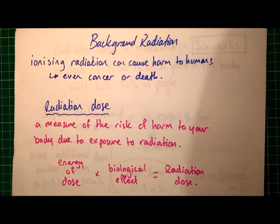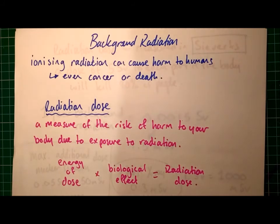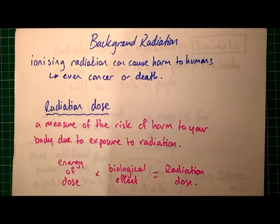Hello. Today we're going to talk about background radiation. As a quick recap, ionising radiation can cause harm to humans, and in high enough doses, it can even cause cancer or death.